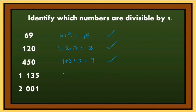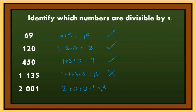Next is 1,135: 1 plus 1 plus 3 plus 5. 1 plus 1 is 2, 2 plus 3 is 5, 5 plus 5 is 10. 10 is not a multiple of 3, so 1,135 is not divisible by 3. Lastly, 2,001: 2 plus 0 plus 0 plus 1 is equal to 3; 3 is a multiple of 3, so 2,001 is divisible by 3.